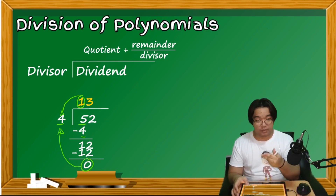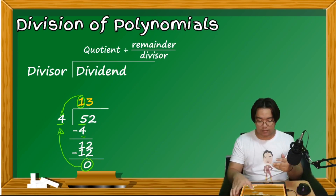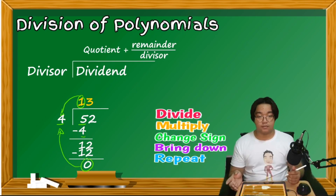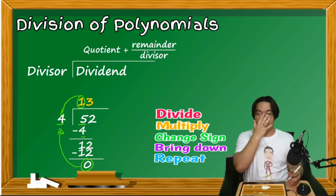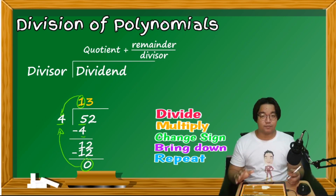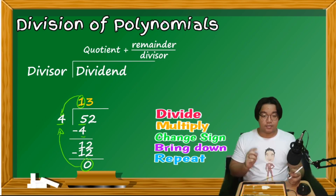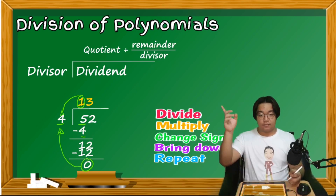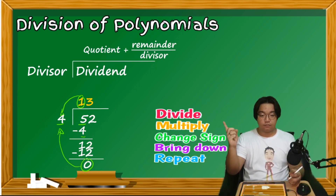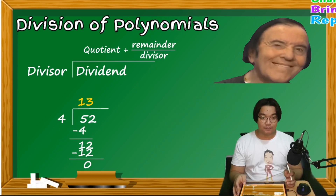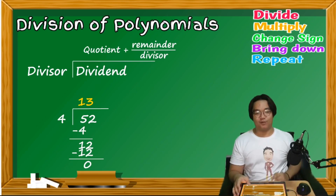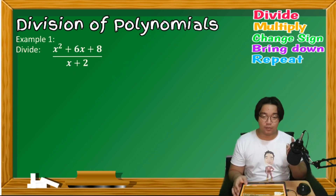When dealing with polynomials, subtraction is very confusing because we handle negative and positive terms. Instead of subtracting, we change the sign of the product and then add. So the steps become: divide, multiply, change the sign, add, bring down, and repeat.